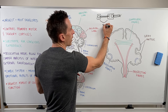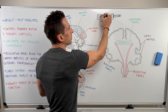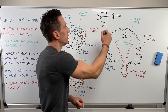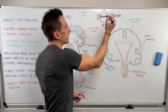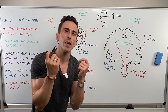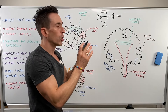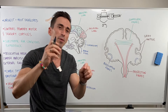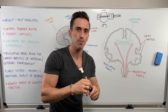Gray matter is where synapsing occurs, and white matter is simply the axons. So when you see gray matter, this is the site of integration — where we make sense of information. The white matter is simply highways, where one signal is sent to the next area.